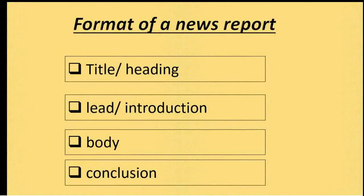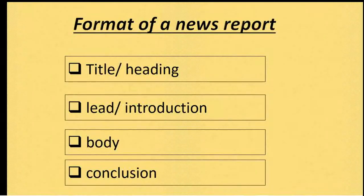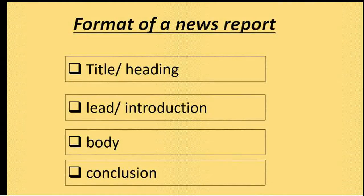Here you find the format of a newspaper report or news report. In a news report, there will be a title or a heading, then the lead or the introduction, the body and conclusion. These are the four things which are included in a news report or newspaper report.